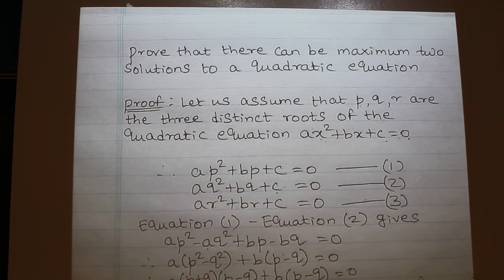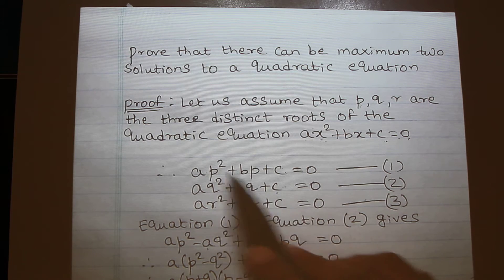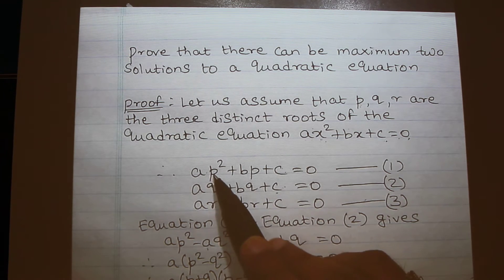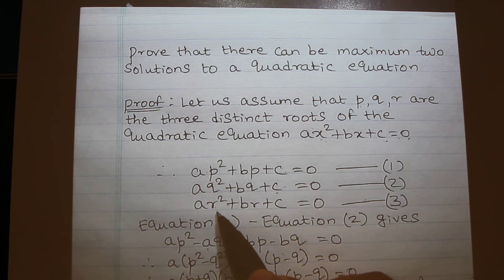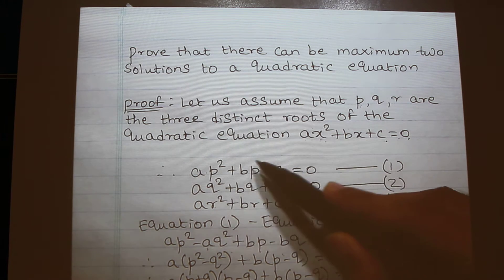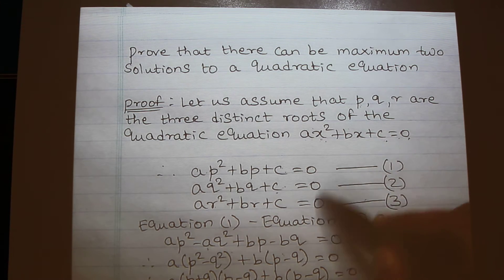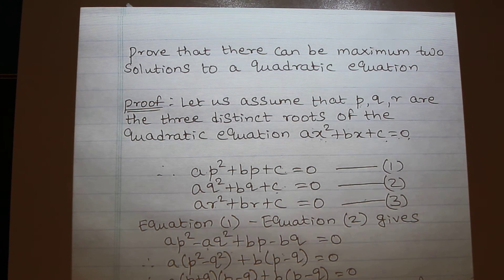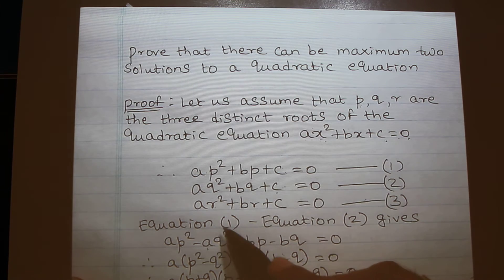We set up three equations: in place of x I substitute p, then q, then r. When we substitute p, q, and r in the left-hand side we will get zero, because p, q, and r are the roots of the equation.